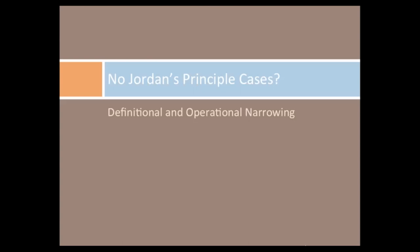Now let's talk about the federal government's finding that there are no Jordan's Principle cases. What our review started to understand is that there's been a process of definitional and operational narrowing of Jordan's Principle — moving from the spirit of a principle designed to help children and families in need to something that maybe doesn't quite live up to that spirit.